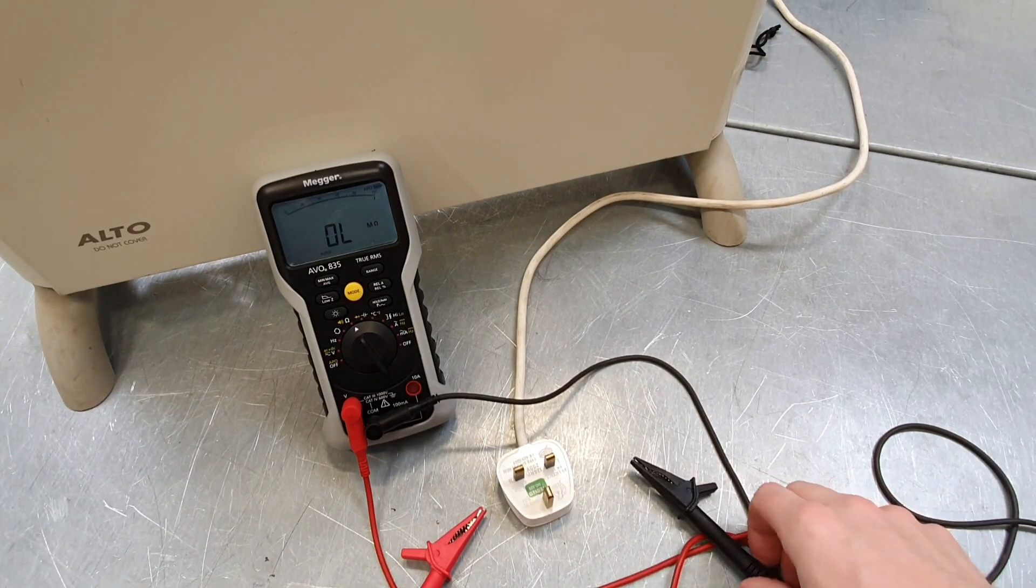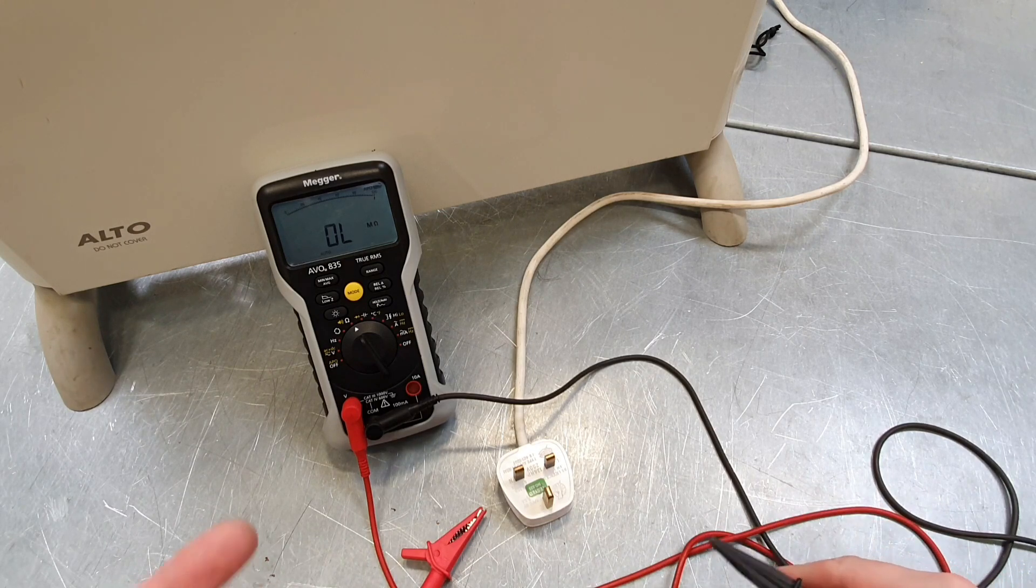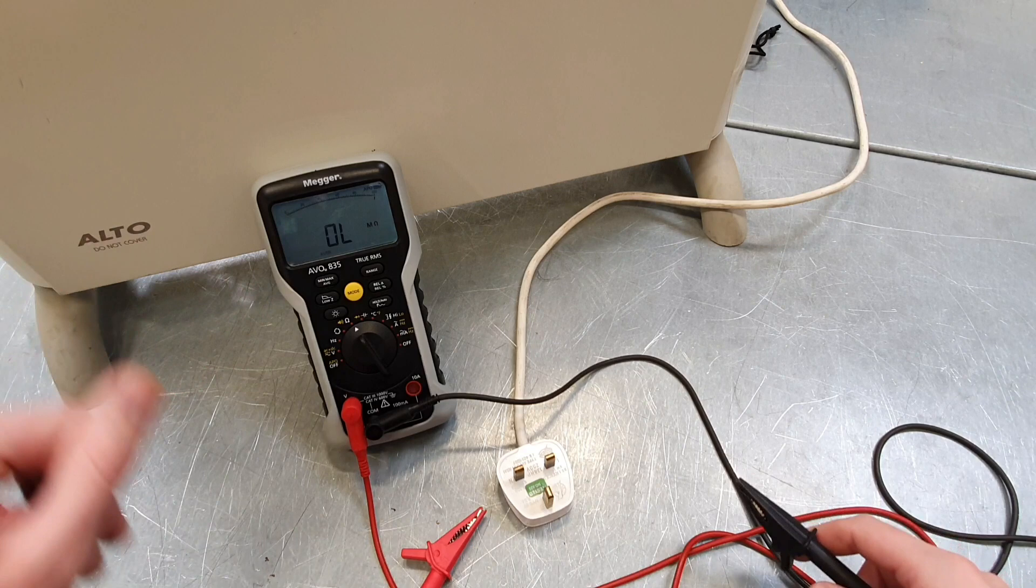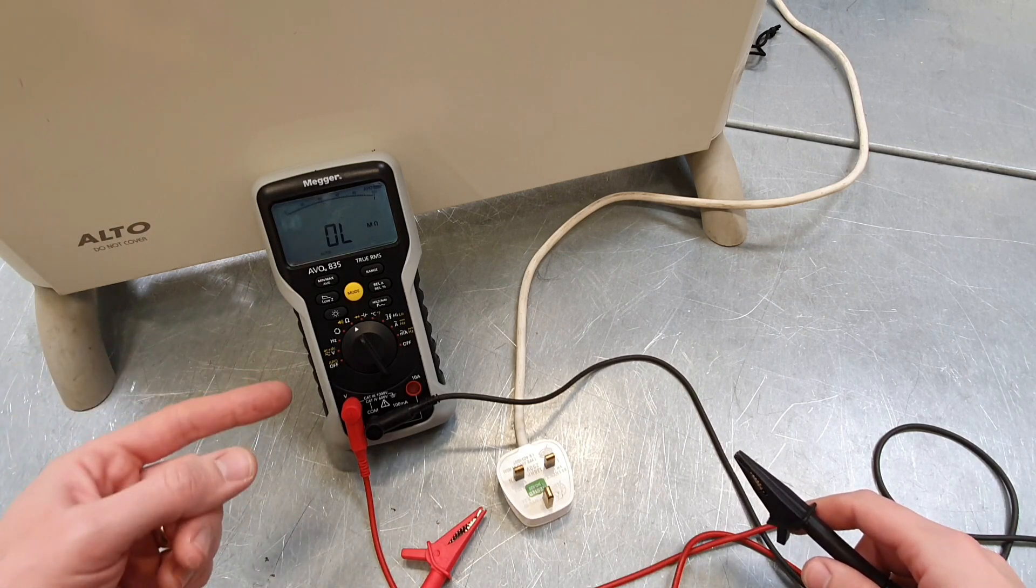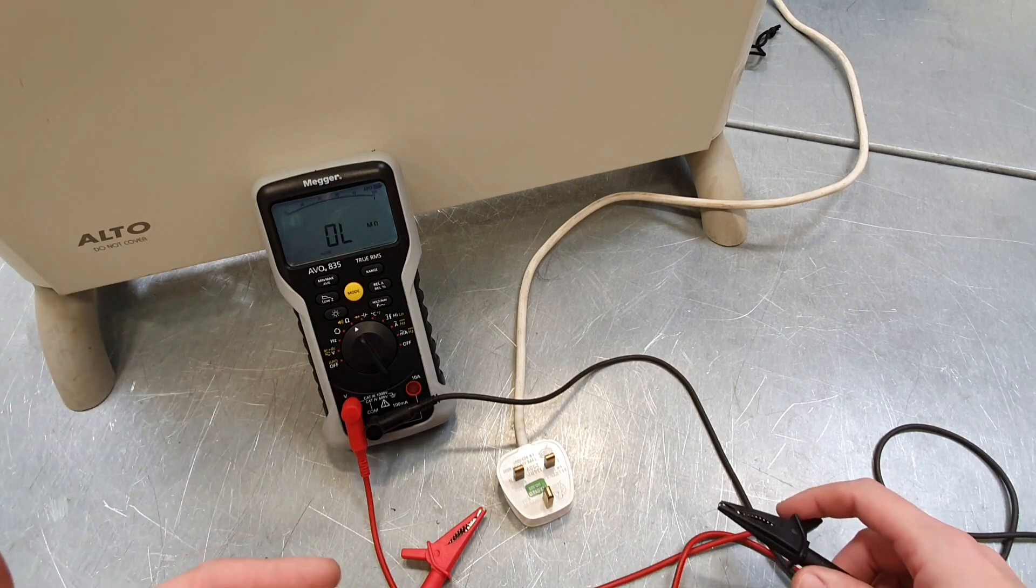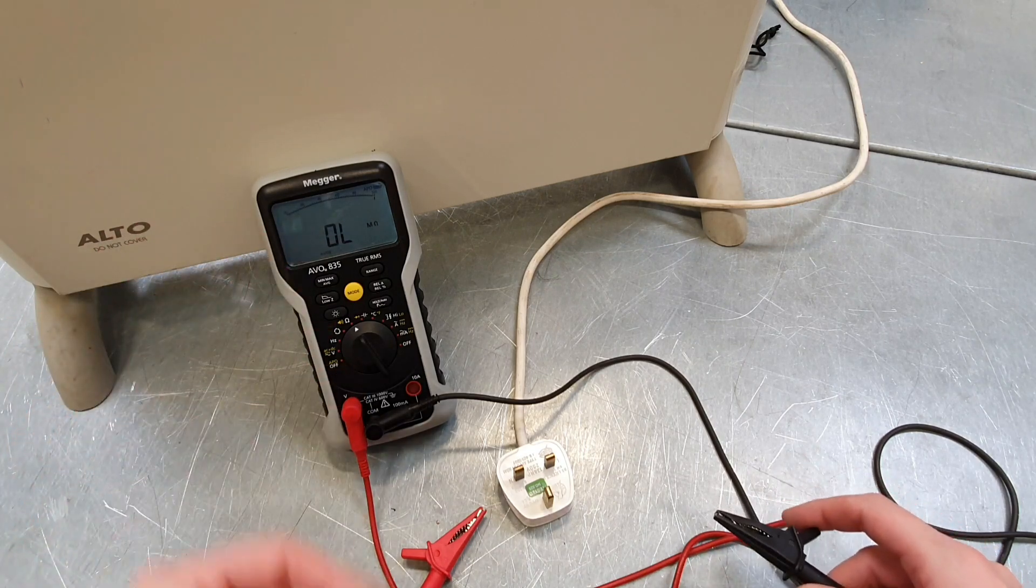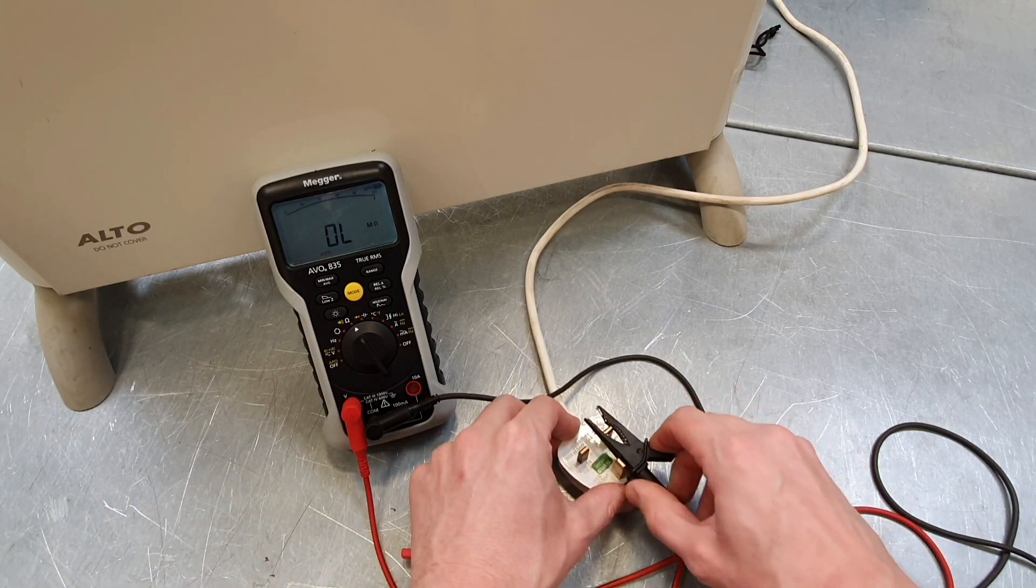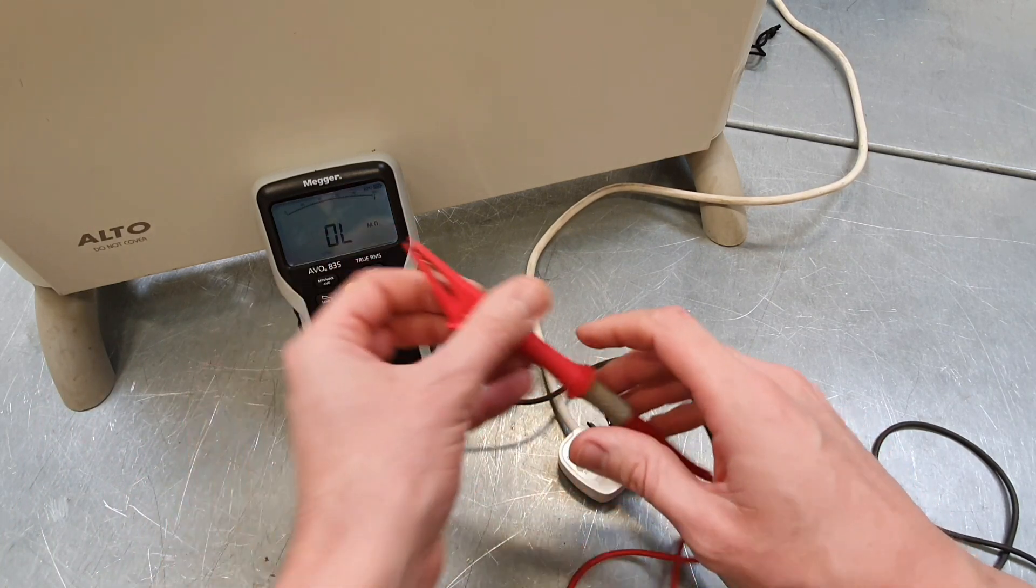So just to prove that our new calculation actually works what we're going to do is we're going to use our two kilowatt heating load that we used in a previous video. We're going to measure its internal resistance and then we're going to perform the calculation to see if our new formula works. We already know how much current this draws from another video in this series.